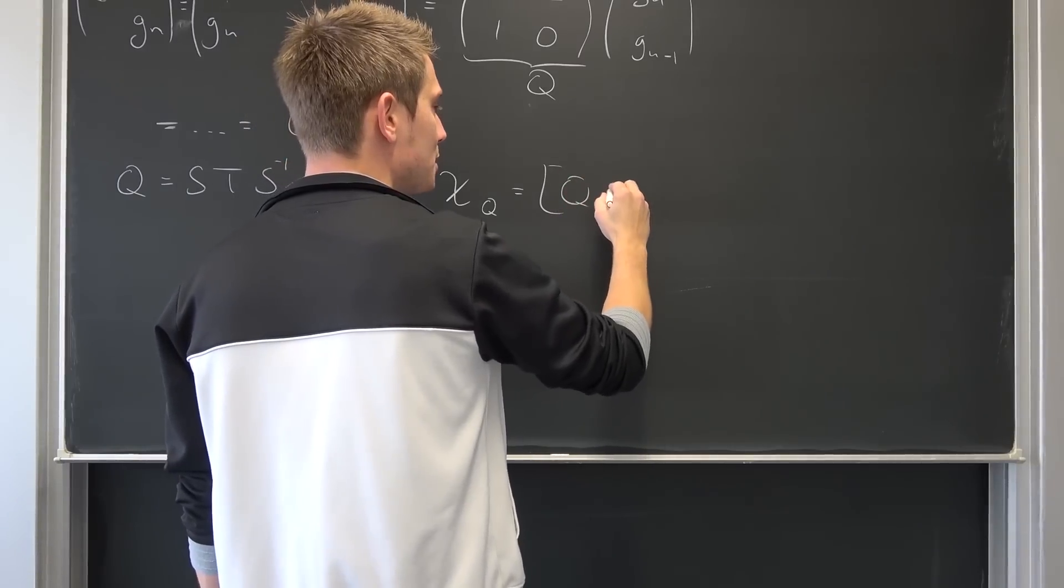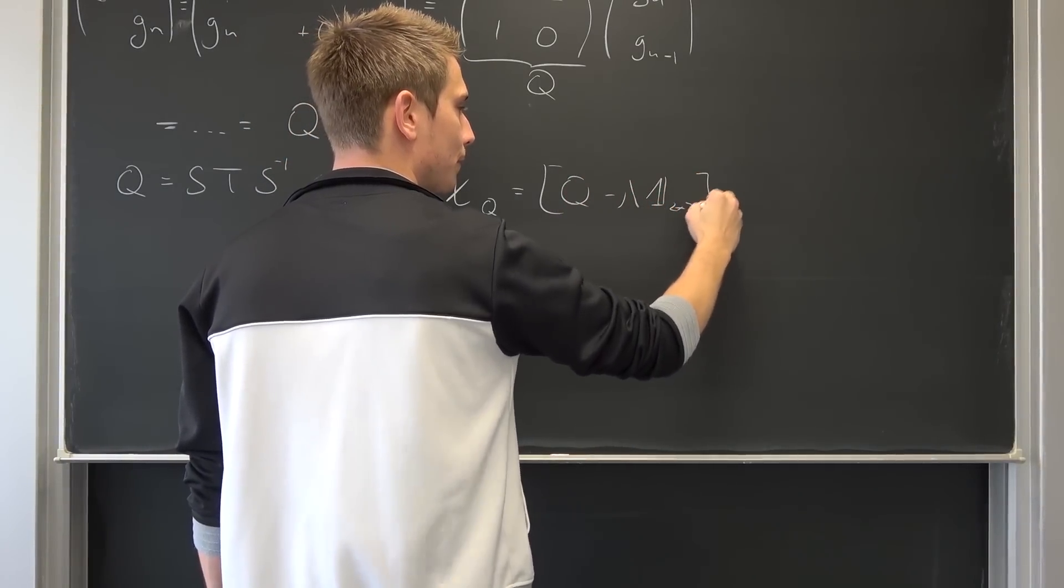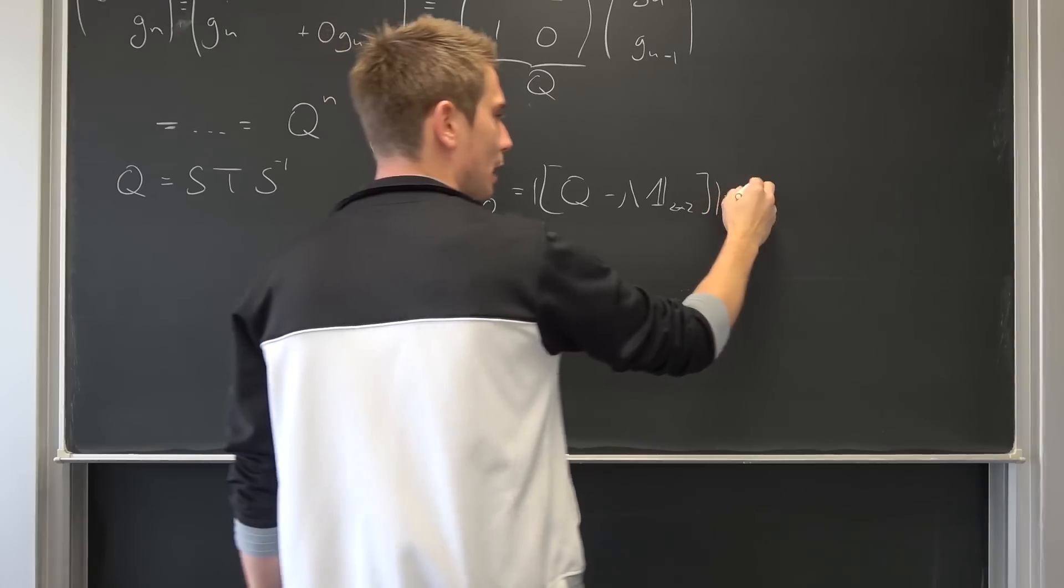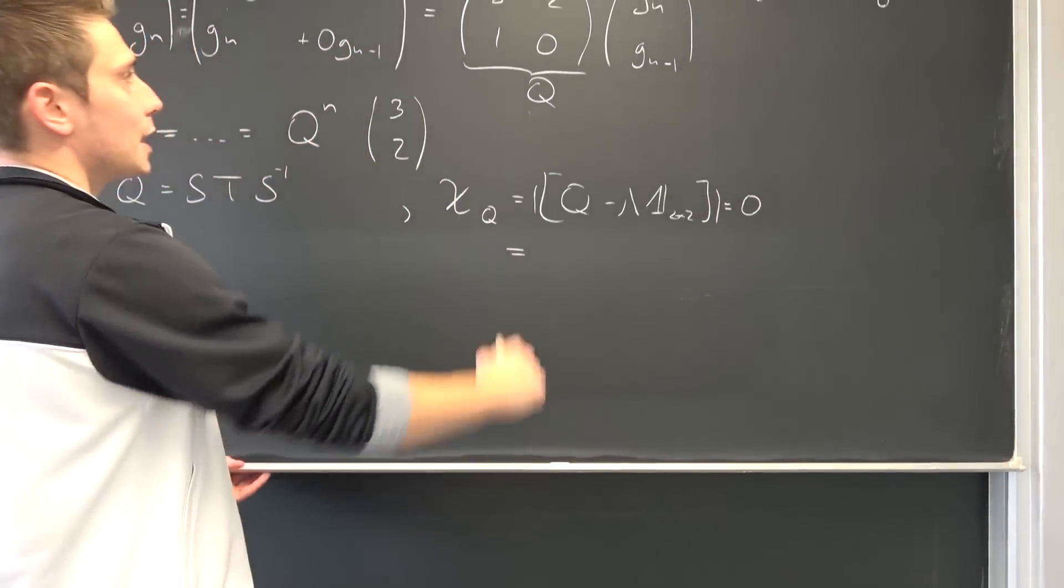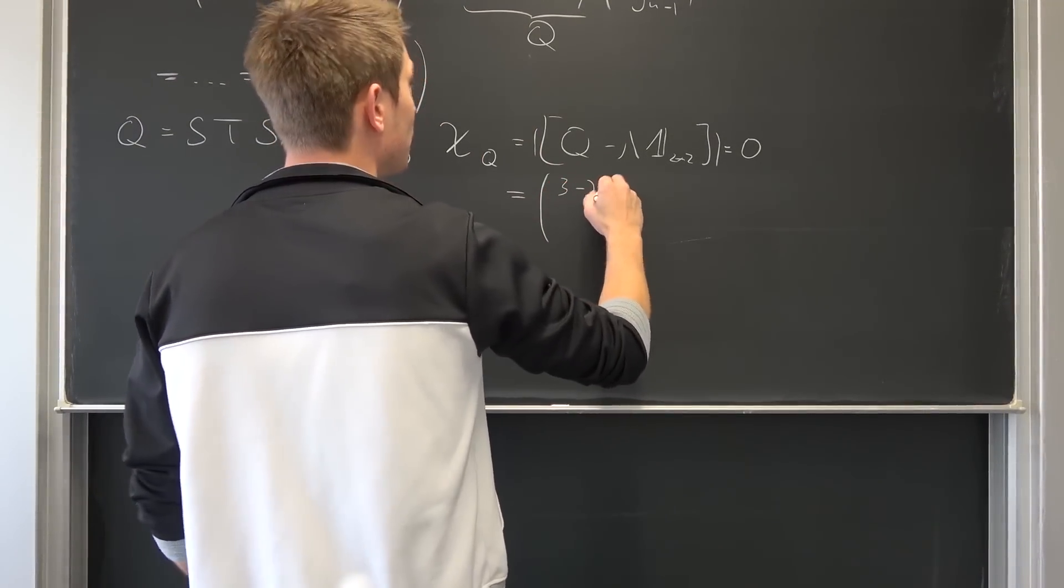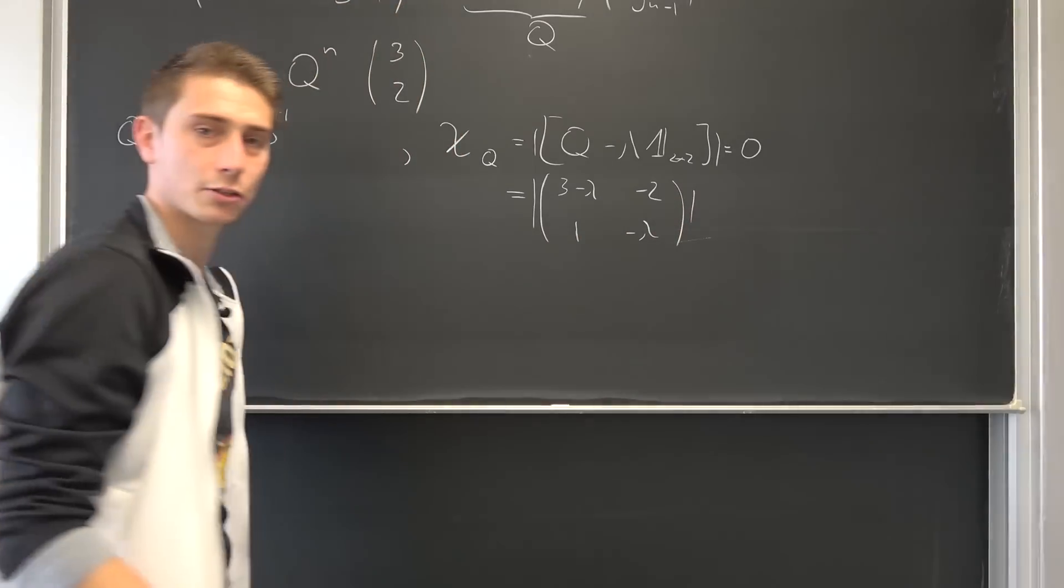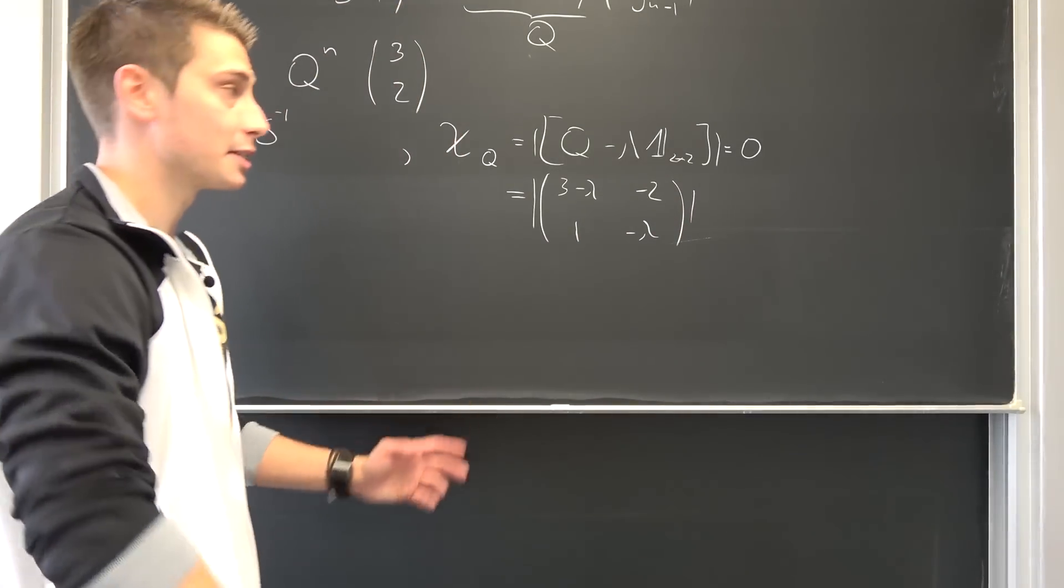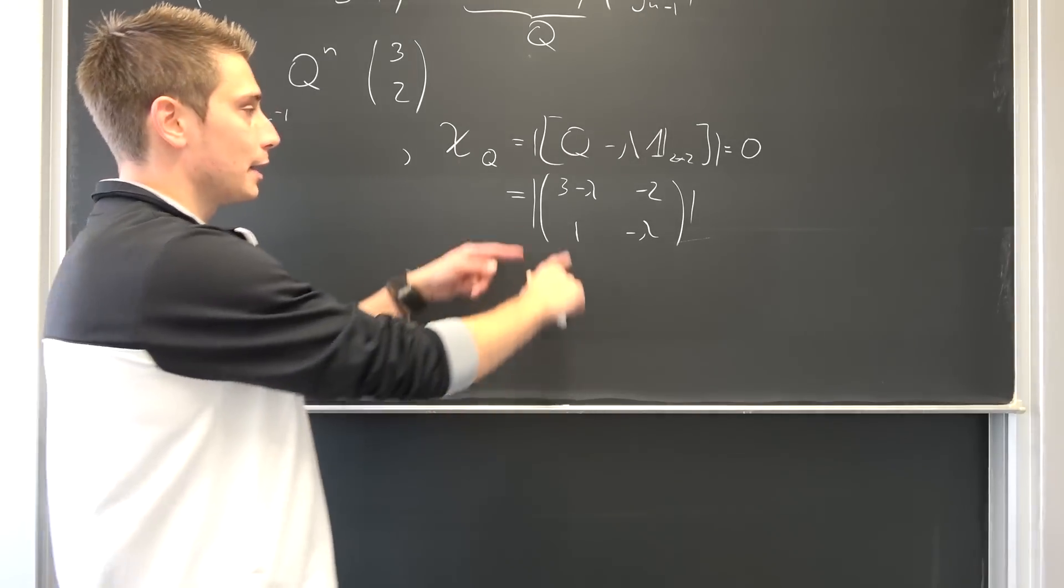This is going to result in Q minus the eigenvalues times the 2 by 2 identity matrix, taking the determinant and you want this to be equal to 0. Meaning we are going to end up with 3 minus lambda, then negative 2, 1 and negative lambda. We have all done complex numbers but different up until this point. We know how to deal with stuff like this.